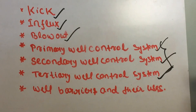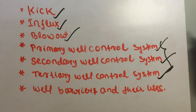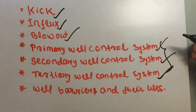Next we will cover well barriers and their usage. Well barriers are used to prevent leakage and reduce the risk associated with drilling. They prevent major hydrocarbon leakage from the well to the external environment during normal production and well operations.